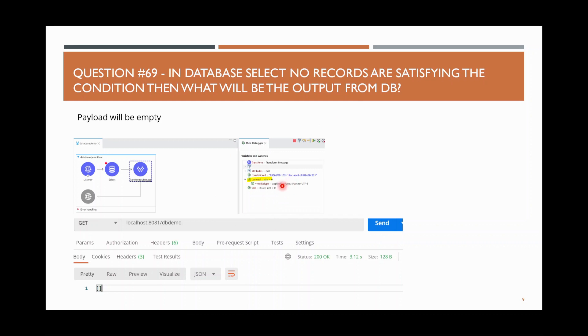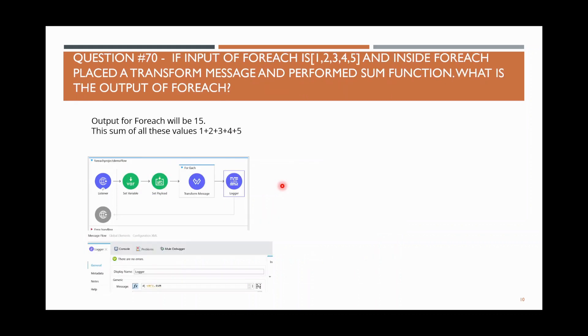The last question is mainly about for each. If your input to for each is the collection [1, 2, 3, 4, 5] — a collection with five elements — and inside for each you place a transform message performing some function, what is the output of for each?